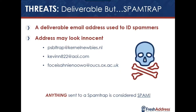The heavy hitter of the deliverable list is spam traps — deliverable email addresses used to identify spammers. A lot of these can look innocent. If I'm doing a manual review and looking at the list, some would be questionable and I'd remove them, but others I probably wouldn't catch myself. Spam traps can be dangerous: sending even one to an influential provider could reduce your inbox placement rates by 40% or more.